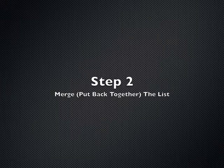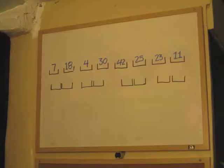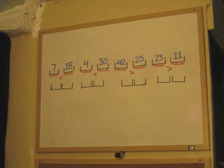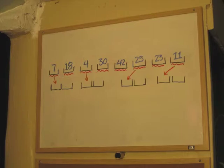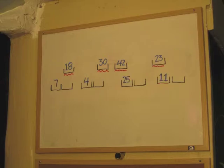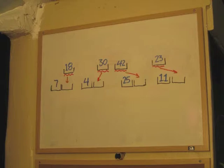Step 2: Merge, or put back together, the list. Our list is now broken up into eight lists of one number each. We want to put these back together into four lists of two numbers, just like we had before we split them up into this step. Compare the first number of each list to the first number in the list next to it. 7 is less than 18, so it will go in the first spot of its list. 4 is less than 30, so it will also go into the first spot. 42 is greater than 25, so 25 will go into the first spot. And 23 is greater than 11, so 11 will go into the first spot.